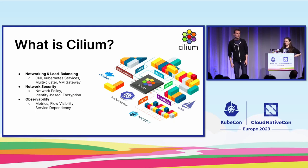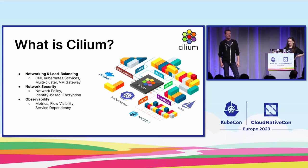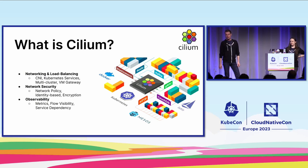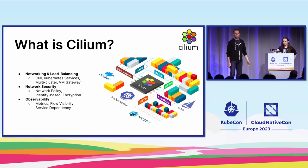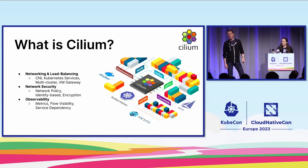Cilium is built on eBPF. You don't have to be an eBPF expert to actually run Cilium. Cilium enables the required eBPF programs on your cluster depending on the settings you set. For today, we're focusing on Hubble and Grafana. That means that you will enable Hubble, possibly enable Hubble UI, and you most likely will enable Grafana metrics through Prometheus.